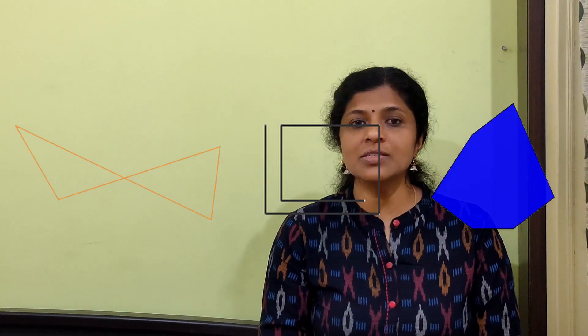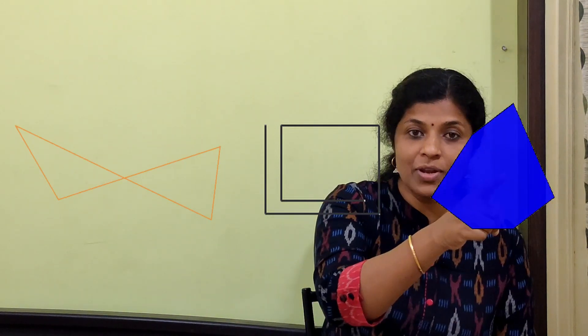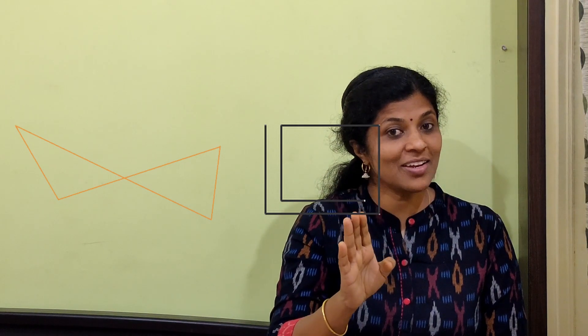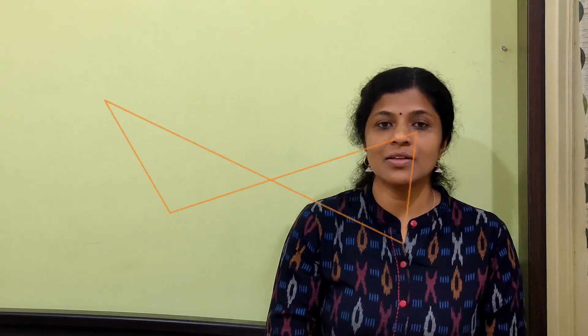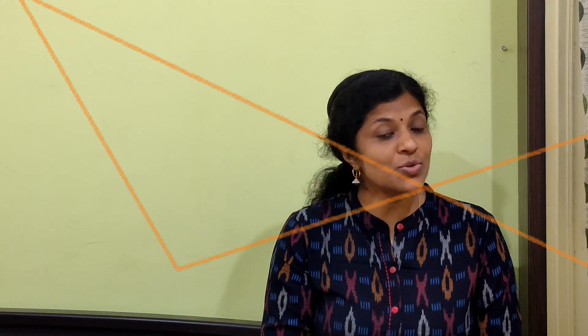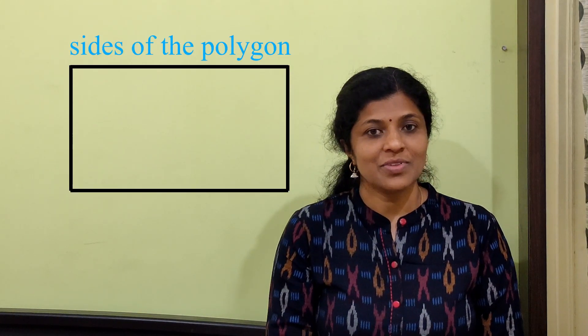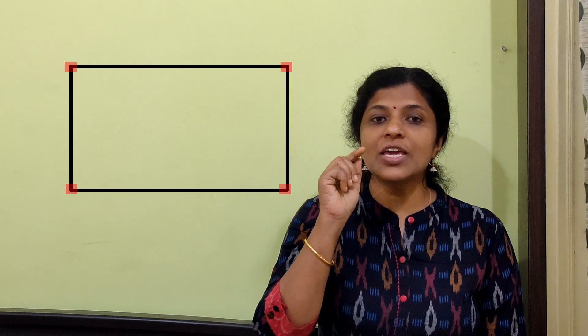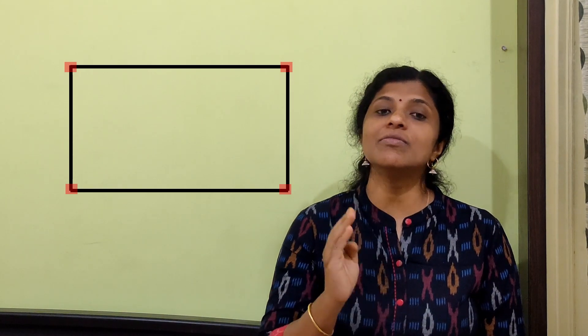Let us do a quick test. Which among these shapes are polygons? This is a polygon. This shape is not a polygon, as the shape is not a closed figure. This is not a polygon either, as this point is shared by more than two line segments. The segments which make up the polygon are called the sides of the polygon. The end point of each segment is called a vertex.